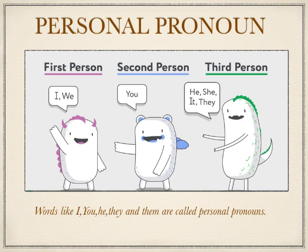For the 3rd person, we use words like he, she, it, and they. The 3rd person refers to the person or thing spoken about. So, the words I, you, he, they, and them are called personal pronouns.